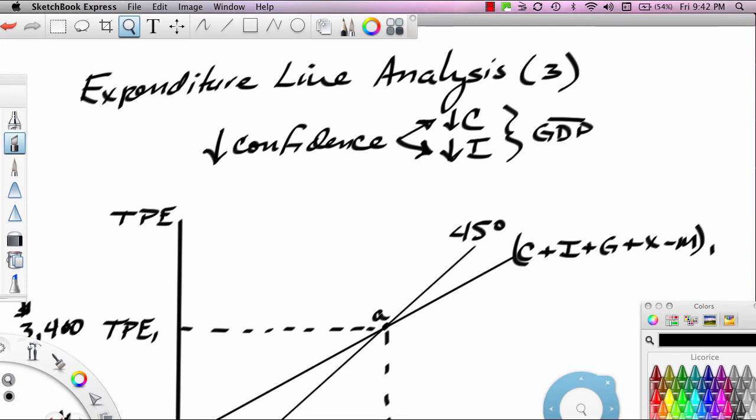Hello, this is Ron Sipsik and this is the third part of a four-part series on expenditure line analysis. In this particular segment, we're going to take a look at how a decrease in autonomous expenditures leads to a recession.